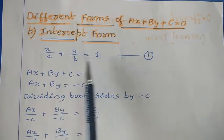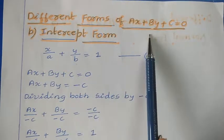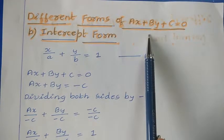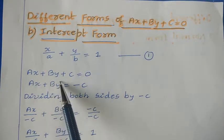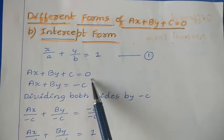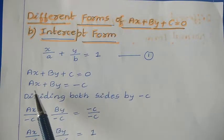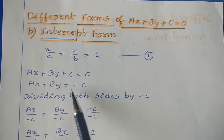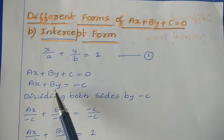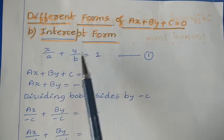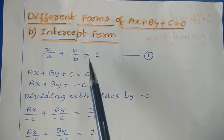Now in this intercept form, we have to represent the general equation AX plus BY plus C is equal to 0. Taking C to the right hand side gives AX plus BY is equal to minus C. Now we divide both sides by minus C so that the right side becomes 1.